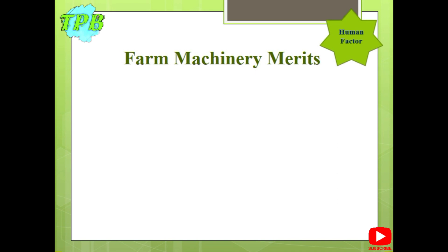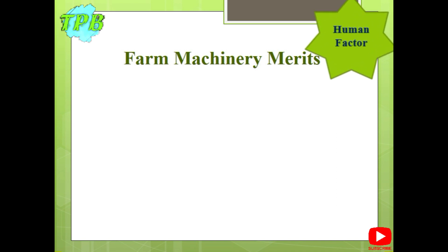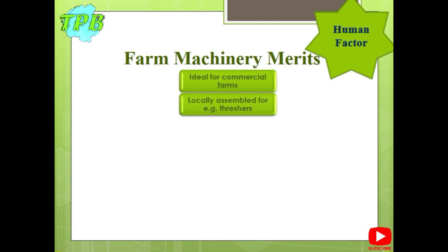Moving on, another human factor is farm machinery. Farm machinery has some merits: it is ideal for commercial farms spread across hectares. Many machines such as threshers are readily available in Pakistan and are locally assembled. The demand for threshers rises during harvest season and many farmers hire them on rent. Farm implements make work faster and save harvesting time, which is especially important for crops such as sugarcane, which must be harvested immediately and transported quickly to the industry for processing.